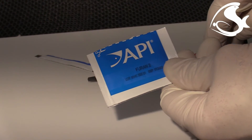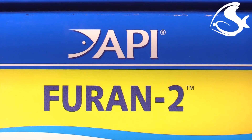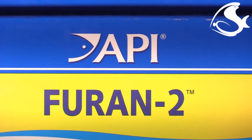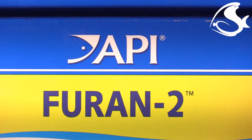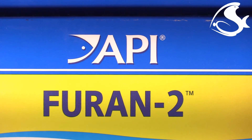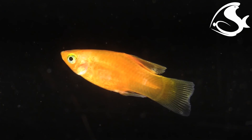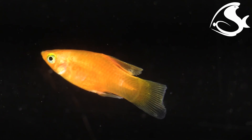There is only one over-the-counter antimicrobial product registered for use in tropical fish in New Zealand: API Furan-2. Furan-2 contains two broad-spectrum antimicrobials — doxycycline hyclate and nitrofurazone. To achieve the most effective results when using Furan-2 as a bath treatment, follow directions as stated.